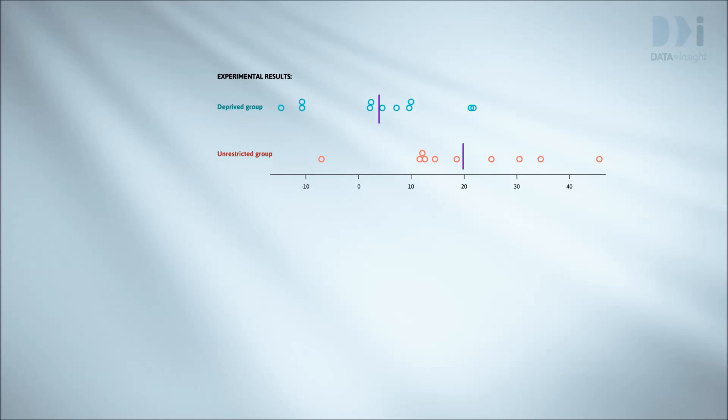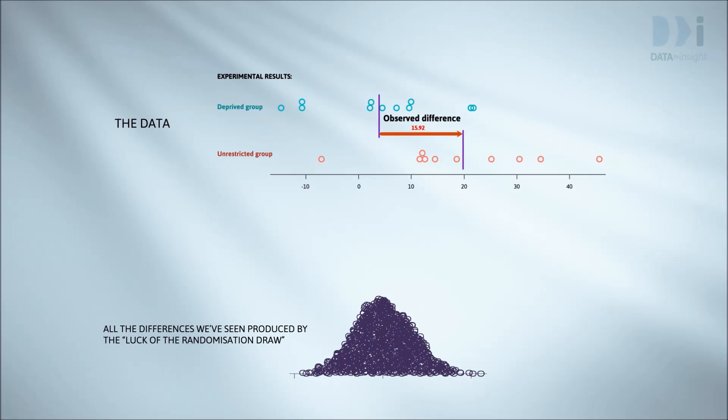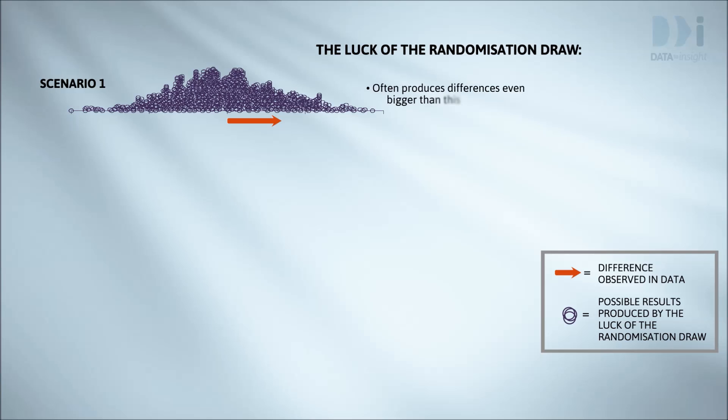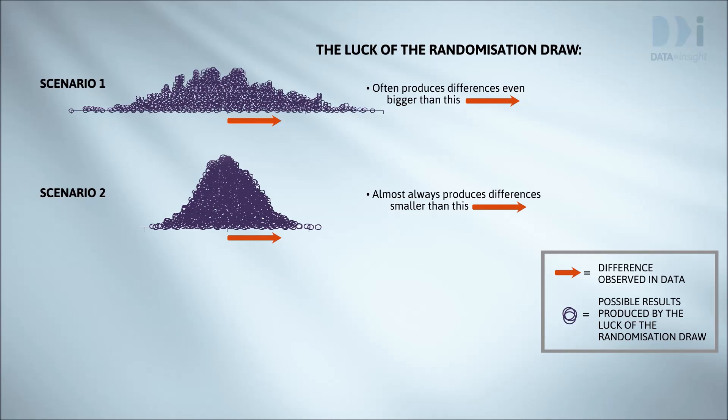Let's expand on this logic. We want to compare the real difference in the data with all the differences generated by re-randomizing. We'll look at several scenarios of what might happen. Here the luck of the randomization draw quite often produces differences even bigger than the one from our data. In this second one, re-randomization hardly ever produces a difference this big, they're almost always smaller. And in this last one, re-randomization never produces a difference this big.